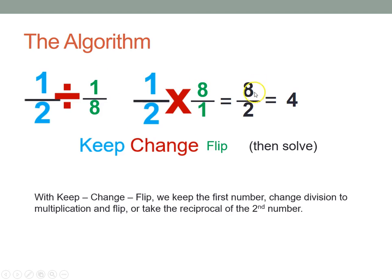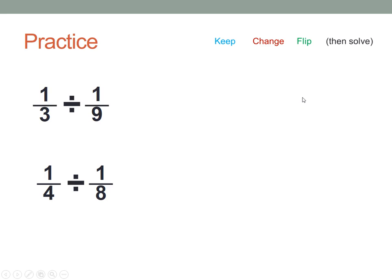And then, of course, we solve it. So, 1 times 8 is 8, 2 times 1 is 2, we simplify that, and our answer is 4. All right, I want you to practice here, so I have two problems for you to do. I want you to do keep, change, flip, and you'll put your answers into Edpuzzle, and then we'll go over it.